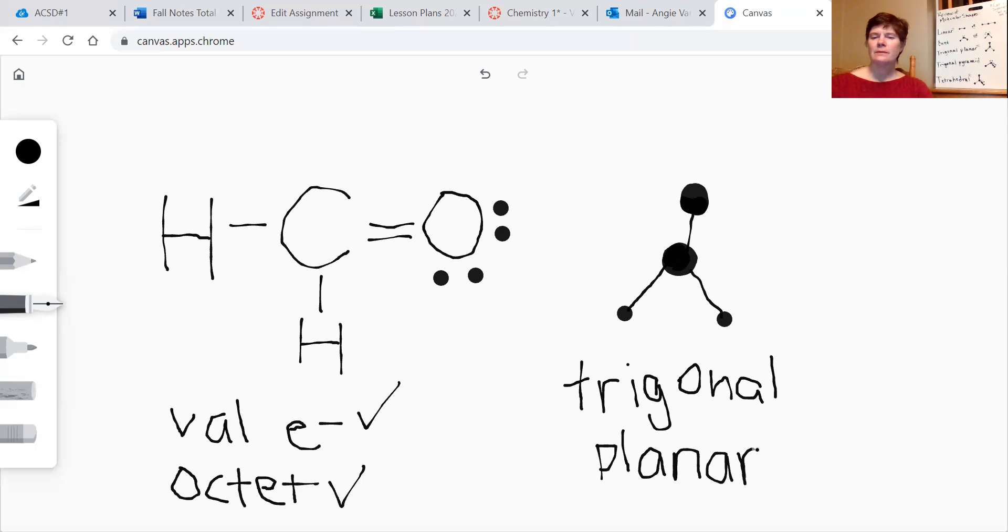Now let's check column 4 and see if it's symmetrical. Now one of the things that would automatically make it not symmetrical is if it had lone pairs on the central atom, which it doesn't have any lone pairs on the central atom. That means that trigonal planar can be symmetrical, but only if the outer atoms are all the same. But that's not the case. We've got two hydrogens and we also have an oxygen. So all the outer atoms are not the same. So that means that this is not symmetrical.